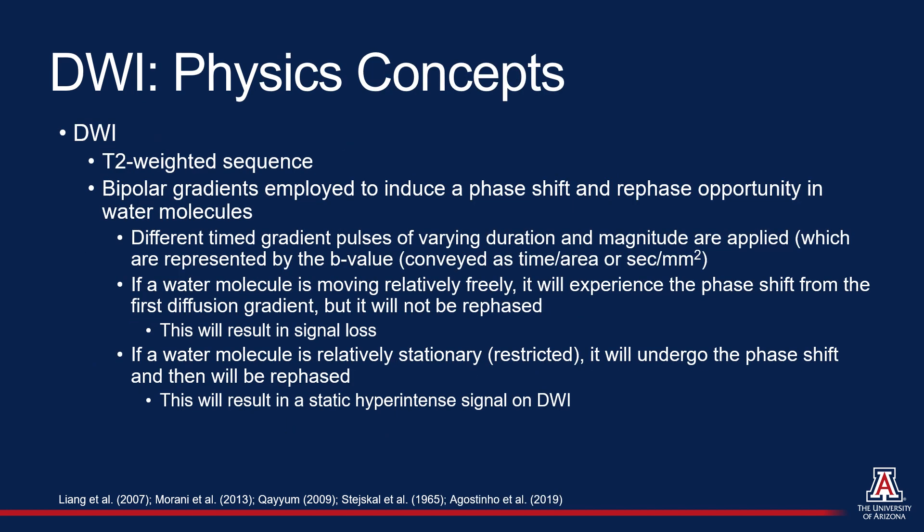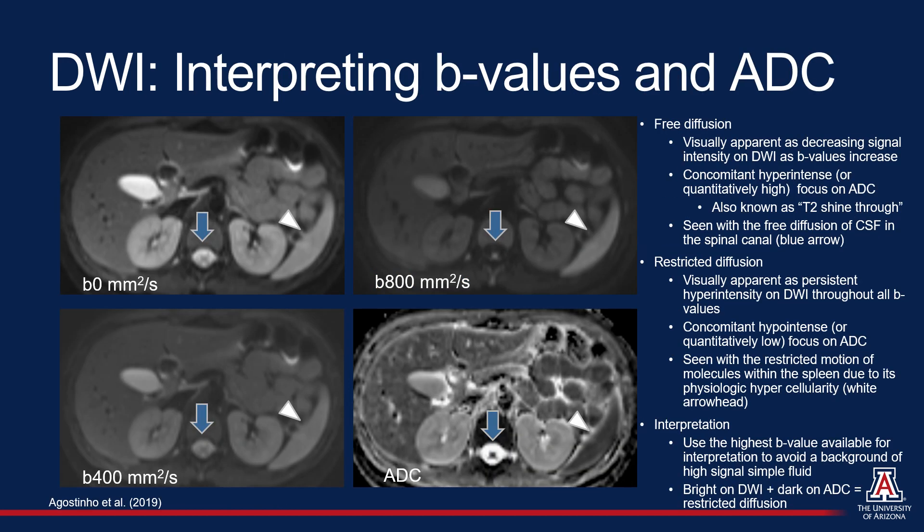DWI is a T2-weighted sequence that utilizes a phase and re-phase gradient. Simply put, if a water molecule is moving freely, it will appear dark on DWI. If a water molecule is restricted in its motion, it will appear bright. DWI is read in conjunction with the Apparent Diffusion Coefficient, or ADC map, which is a plot created from the DWI images. When interpreting DWI images, we use the highest B-value available in most cases to reduce background water signal, and sites of restricted diffusion will appear bright. On ADC, if the corresponding location appears dark, that is true restricted diffusion. Here, we see this in the spleen due to its physiologic high cellularity.